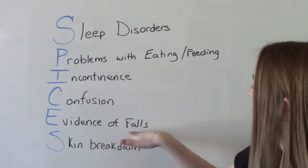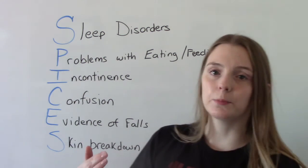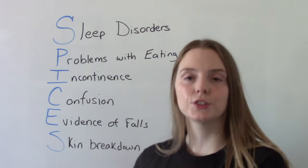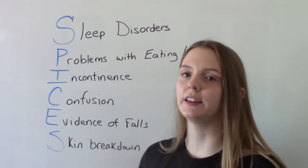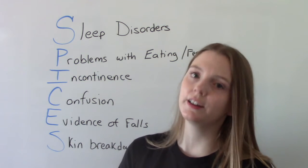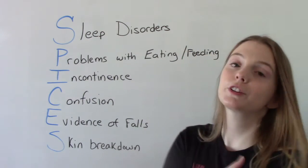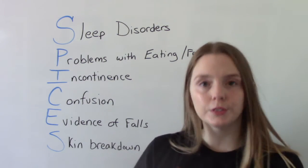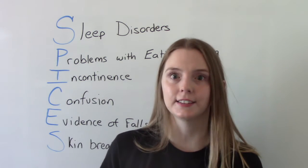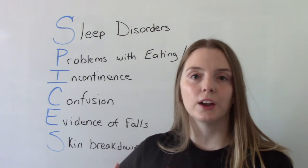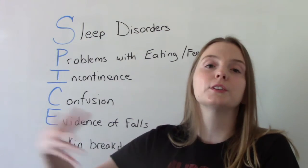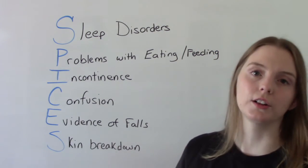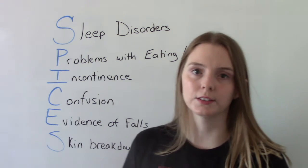E is for evidence of falls. This is going to be both subjective and objective — asking them if they have a history of falls or have fallen recently, but also doing a thorough head-to-toe and looking for signs of falls: recent injuries, bruising, cuts, scrapes. Observe their gait when they walk into the room and assess their mobility. Check for risk factors for falls and ask about recent falls.